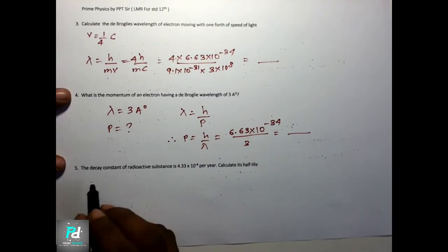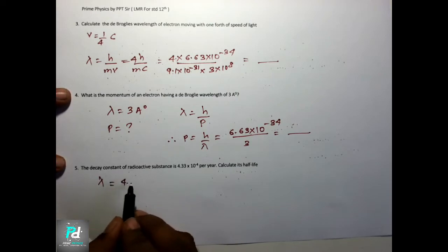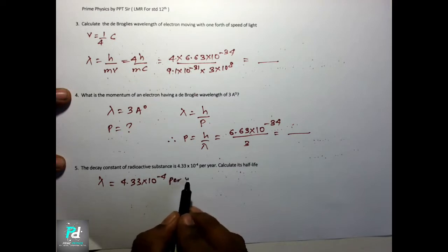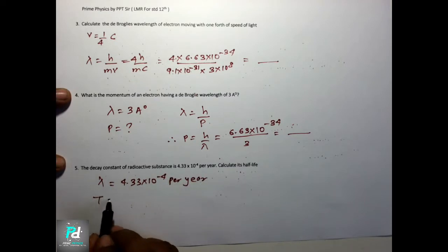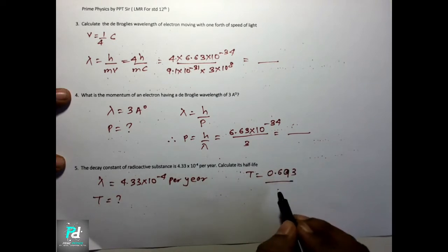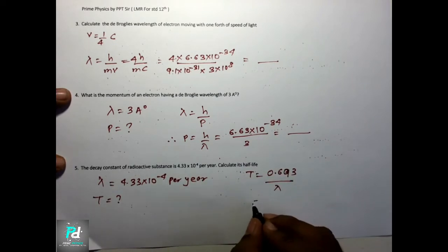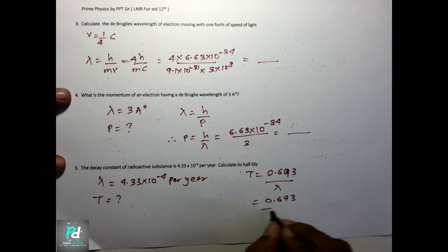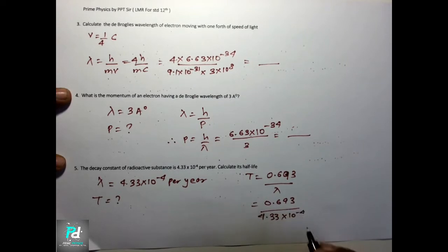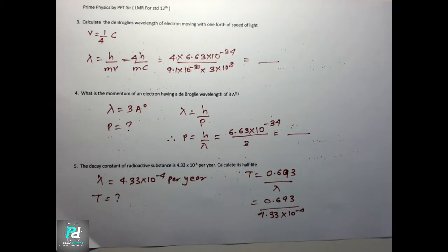One sum where decay constant lambda is given as 4.33×10⁻⁴ per year, and half life is asked. Formula: T½ equal to 0.693 upon lambda, so 0.693 upon 4.33×10⁻⁴. Calculate the answer. These are all easy sums — I think you can all do them. There is no complaint with these. All textbook sums have been covered.